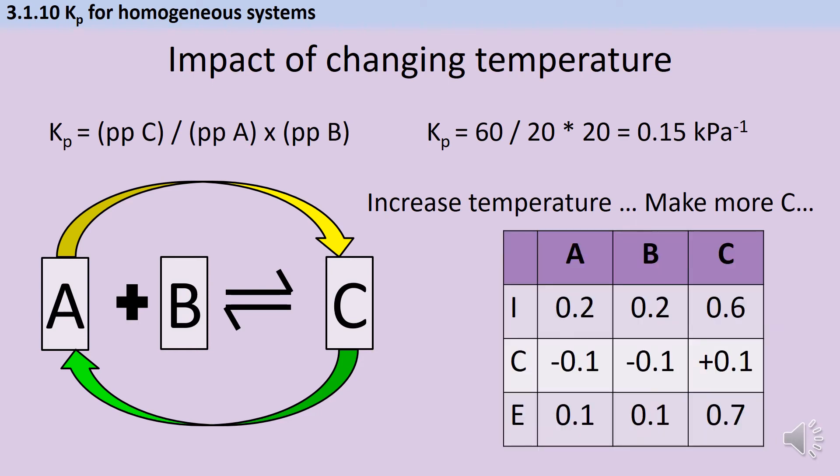Here's an ice table for all the chemicals involved in our reaction. So we started with 0.2 moles, 0.2 moles and 0.6. And then if we say, for the sake of argument, that the shift of our equilibrium led to an increase in C of 0.1 moles, well, because there aren't any coefficients in our symbol equation, that means that the moles of A and B must also reduce by 0.1. So now we have moles of 0.1, 0.1 and 0.7.